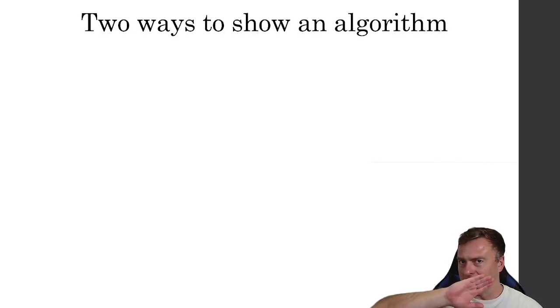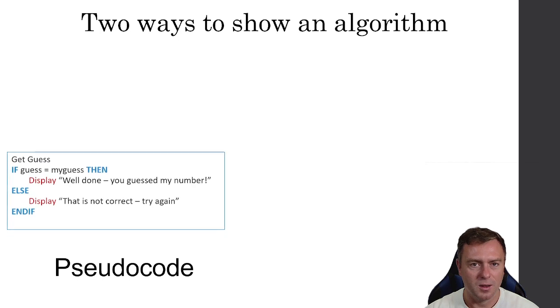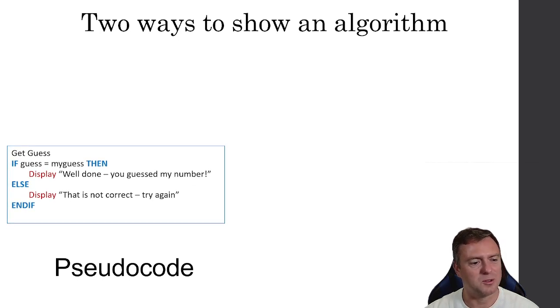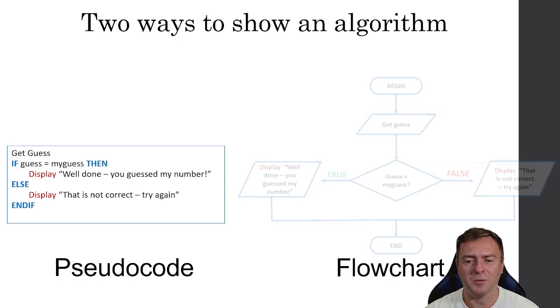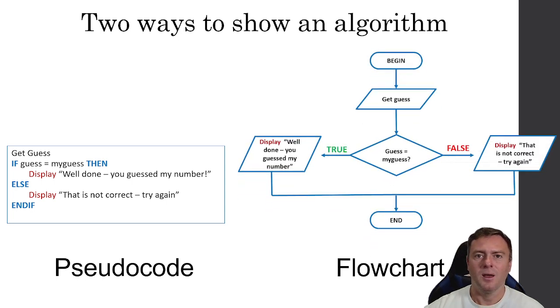So there's two ways that we can show an algorithm. We can either use pseudocode which looks like this. So if you get this game, game has been guessed. If a guess is equal to my guess, well done, you guessed my number. Otherwise that's not correct. Or we can write that exactly the same in a flowchart. Now flowcharts are a little bit easy to read because you sort of just follow along and you can understand. Whereas pseudocode is probably a bit more compact and eventually you will get used to sort of the structure that happens behind the scenes. But both these two represent exactly the same thing of an algorithm.